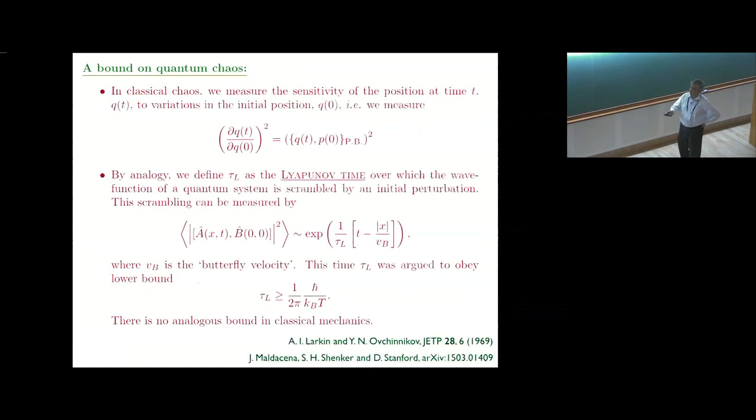This idea has been made much more precise by very beautiful work by Maldacena, Shenker, and Stanford recently, who generalized a proposal of Larkin and Ovchinnikov. They were thinking by analogy to a classical picture of chaos. You imagine a system which follows a trajectory Q of t, and then you change its initial condition and look at the response of Q of t to the change in the initial condition. This is the square of the Poisson bracket of Q of t and P of zero, so the natural generalization for a quantum system would be to replace the Poisson bracket by a commutator.